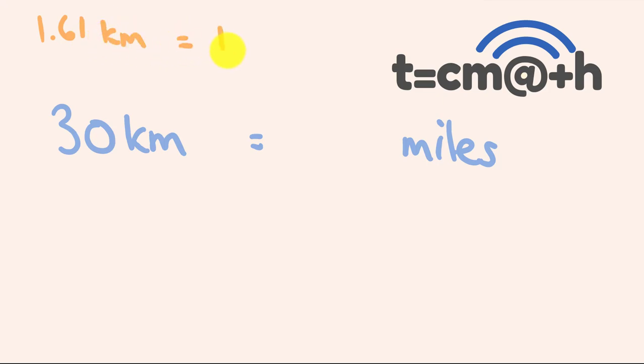But if we work out the reciprocal of this here, we could also then say that 1 kilometer is equal to 0.62 miles. And so what we could essentially do is we multiply 30 by 0.62, we get our answer. But how could we do this in our head?